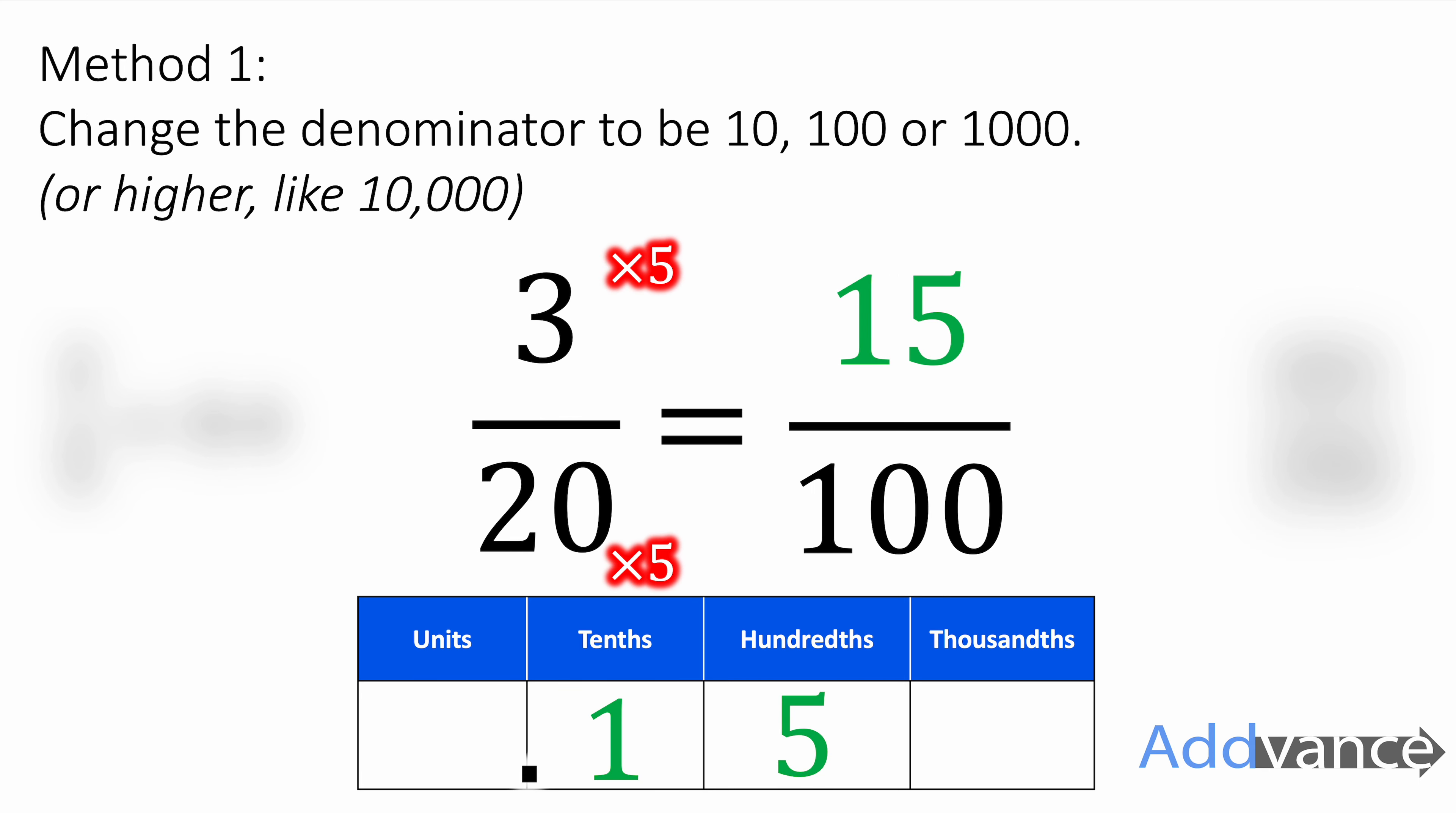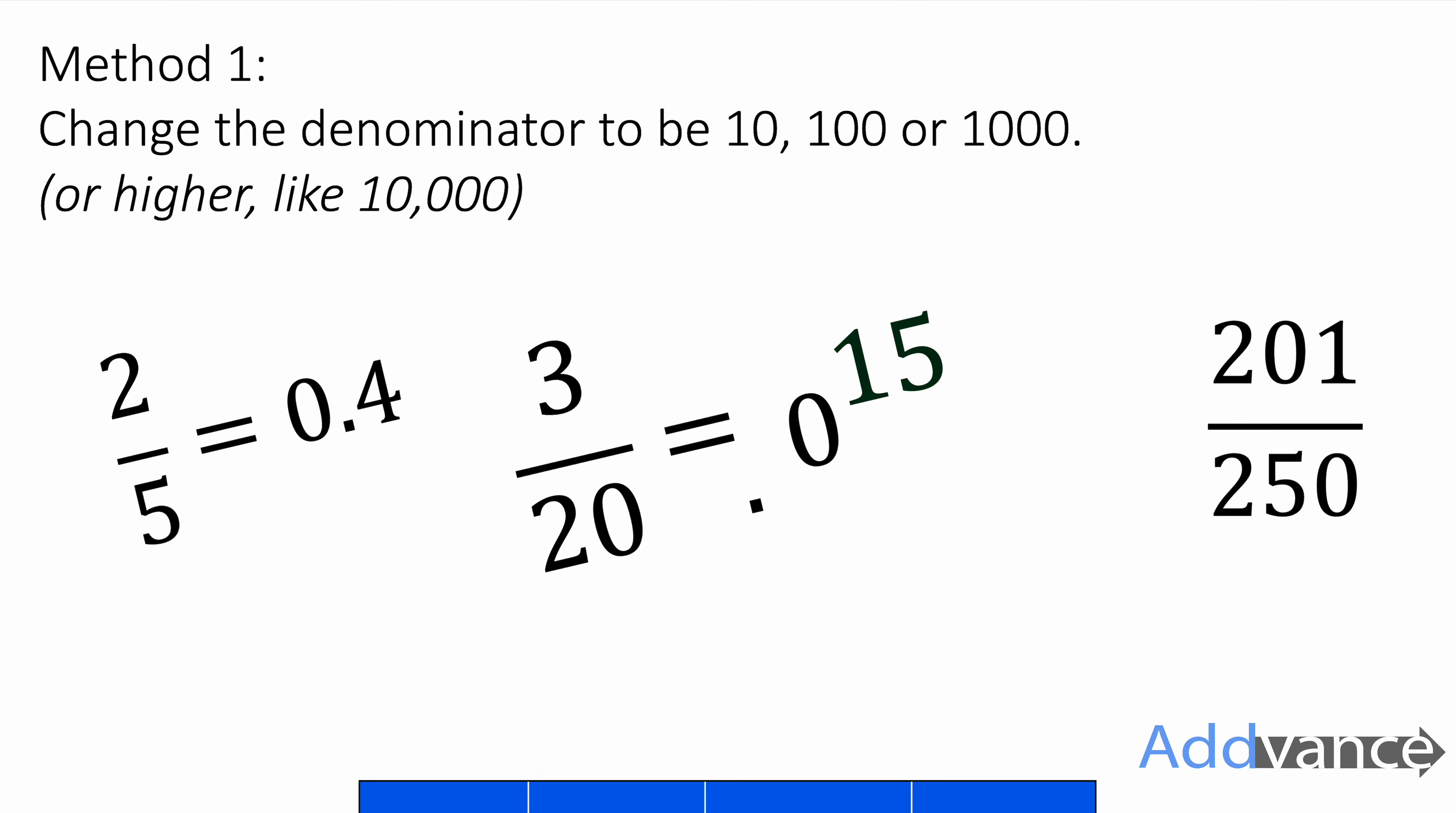Or we can make it simpler, we can just think of it as a fraction like this, 0.15, and it's 15 out of 100. The digits on the top of the fraction are the same as the digits in the decimal. So we've converted three-twentieths into a decimal, 0.15.